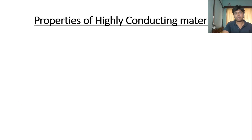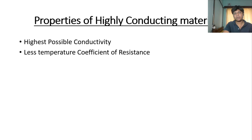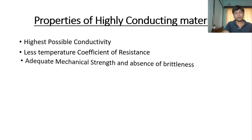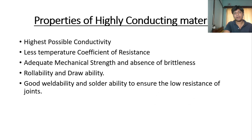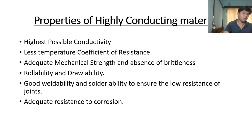Now let's look at some important properties of highly conducting materials. First is the highest possible conductivity. Second is lowest possible resistance, meaning whose resistance decreases with increase in temperature per degree Celsius. Third is adequate mechanical strength and absence of brittleness. Fourth is reliability and drawing quality. Fifth is good weldability and solderability to ensure low resistance of joints. The last is adequate resistance to corrosion.